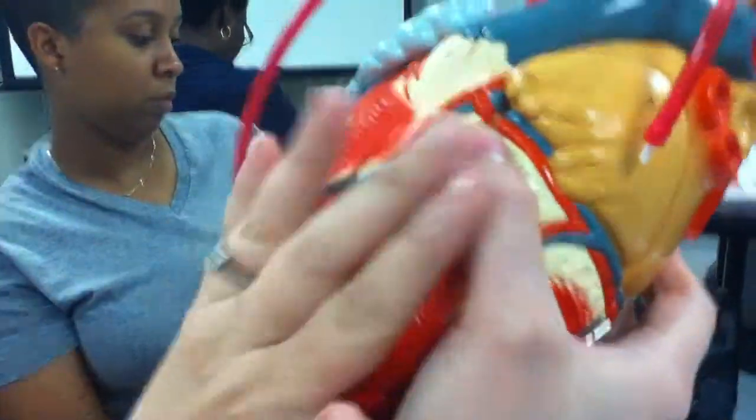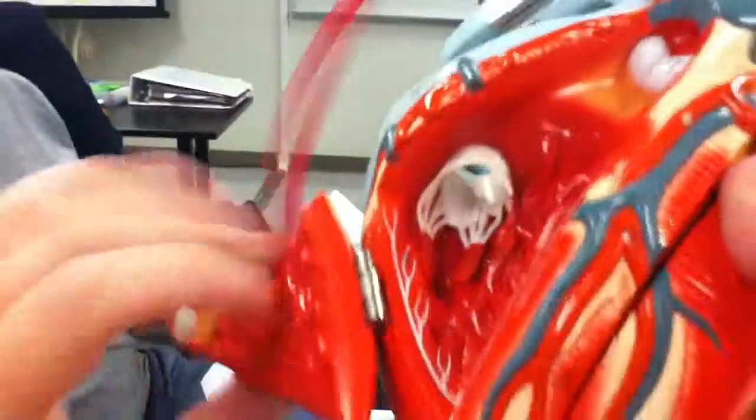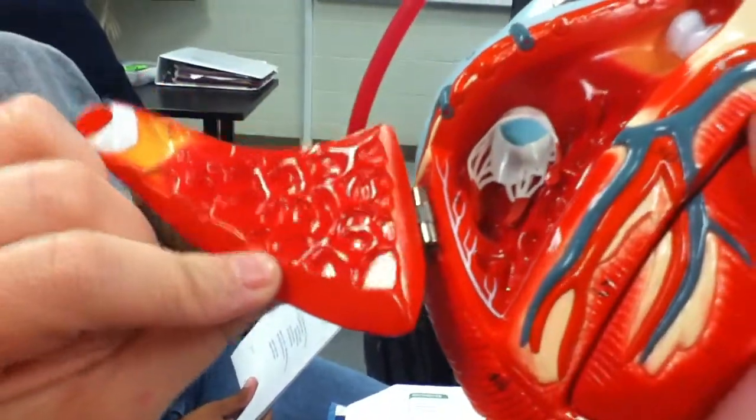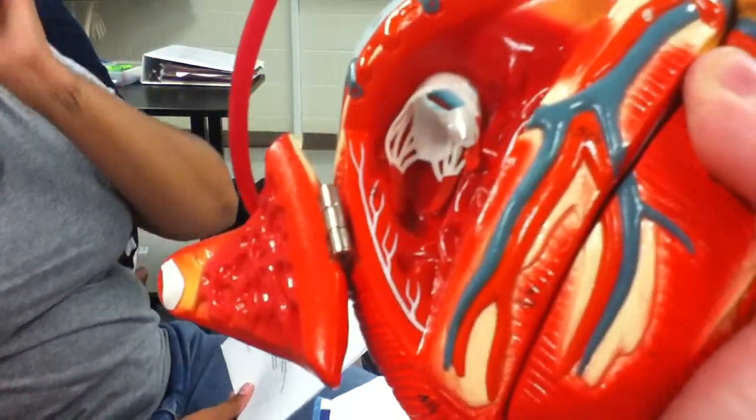The layers: the outside layer is the epicardium, the muscle layer of the heart, which is this thick muscle, is the myocardium, and the innermost layer that touches everything is the endocardium.